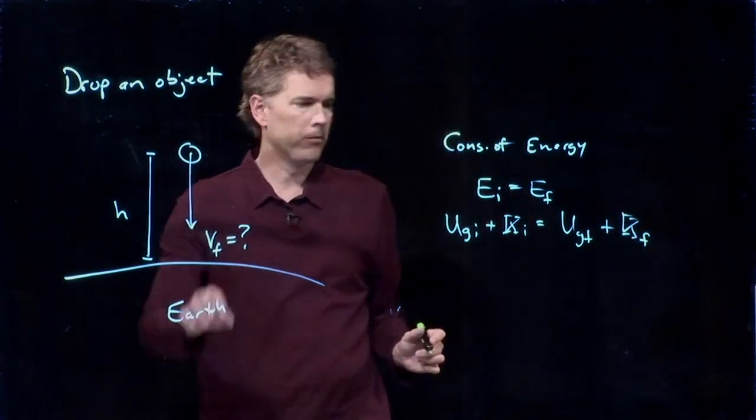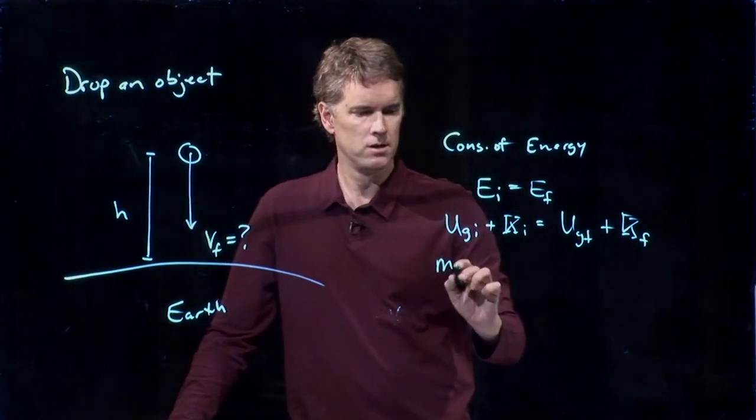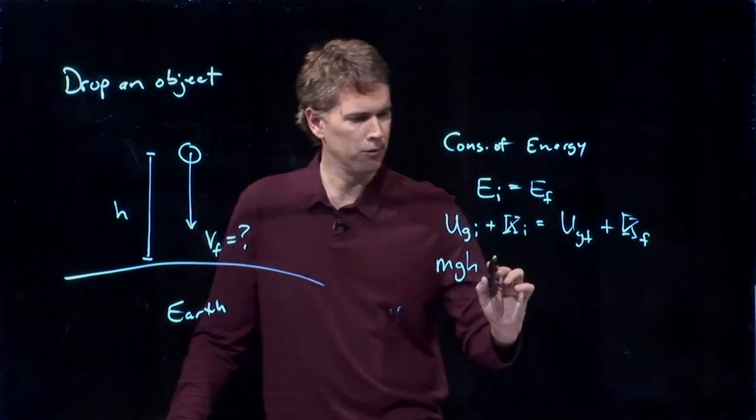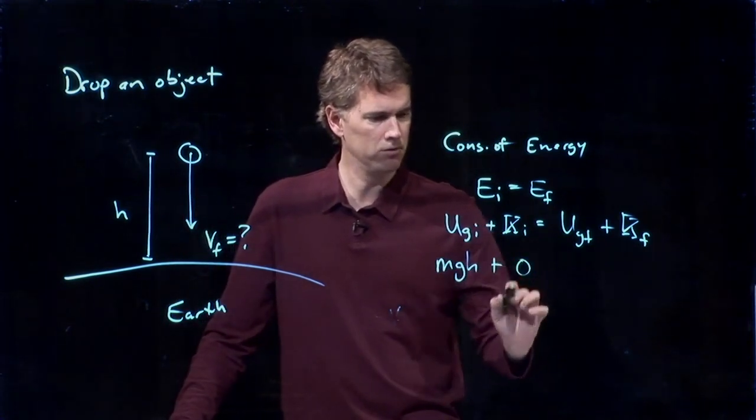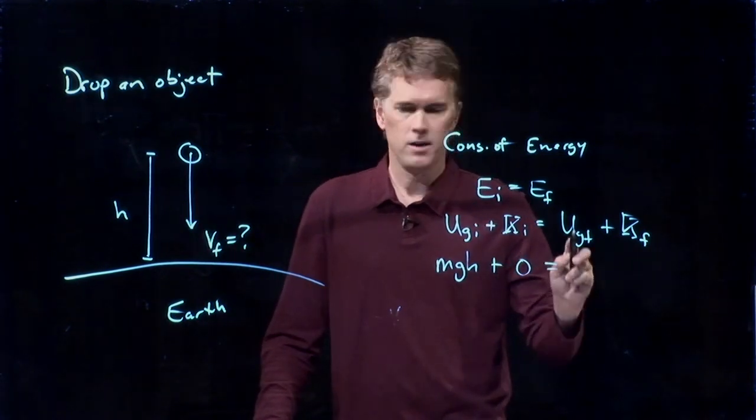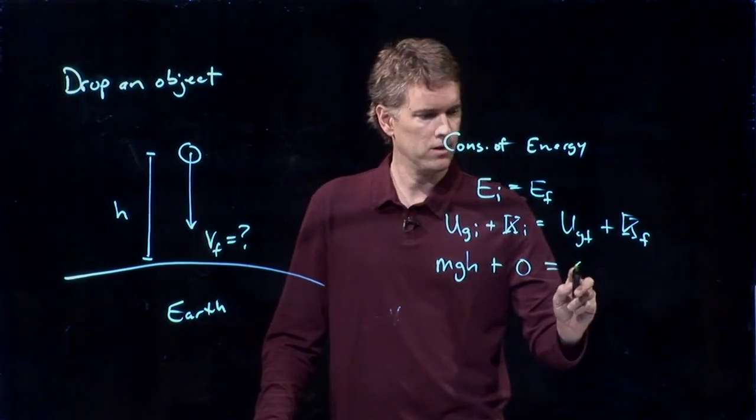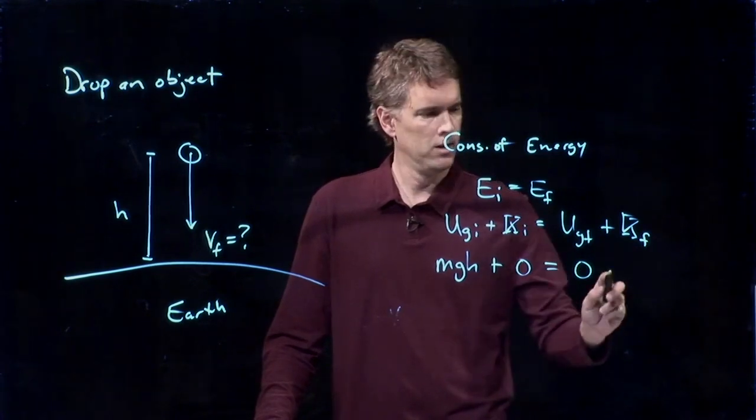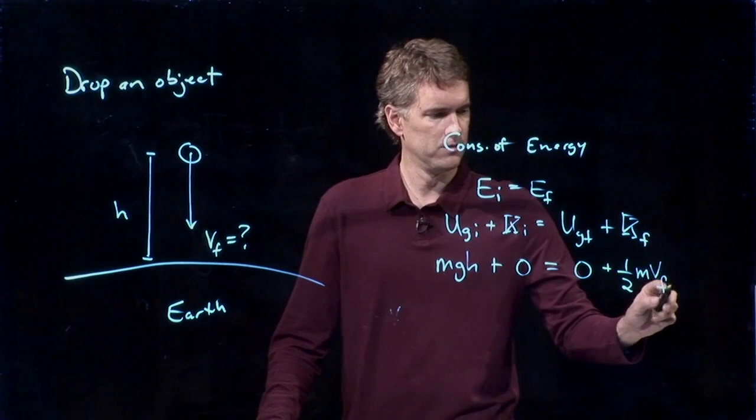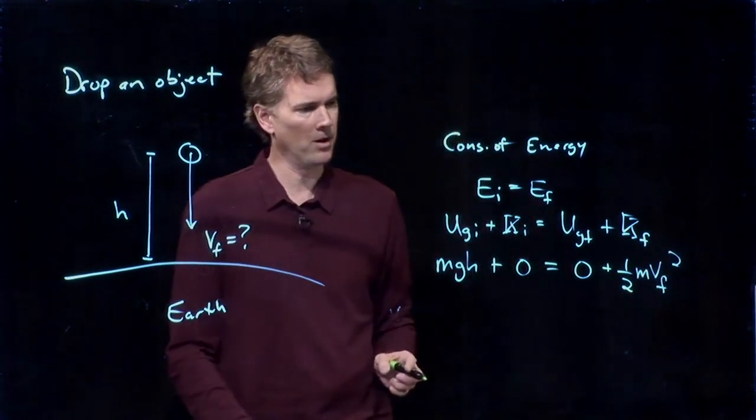If we're starting up at a height h, then the potential is just mgh. If we're starting at a speed of 0, that is 0. If we are ending at the ground, final height is 0. And if we're moving just before we hit the ground, we've got kinetic energy of 1 half mVf squared.